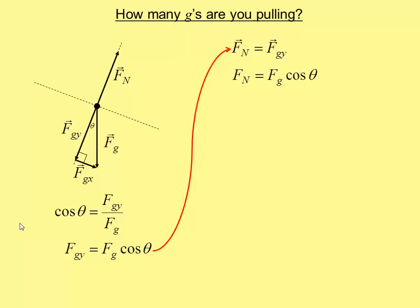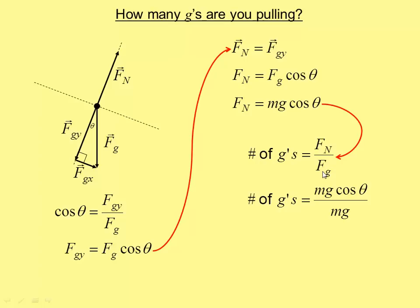So F_N is F_g cosine theta. And as we've done many times this year, as long as we are near the surface of the Earth, we know that the force of gravity acting on any object is its mass times its gravitational field strength. So the number of g's in this case is the normal force you're feeling divided by your force of gravity. The normal force you're feeling is mg cosine theta. The force of gravity, or your weight, is mg. They cancel. And so your number of g's is simply the cosine of theta. All it depends on is the angle of the track.